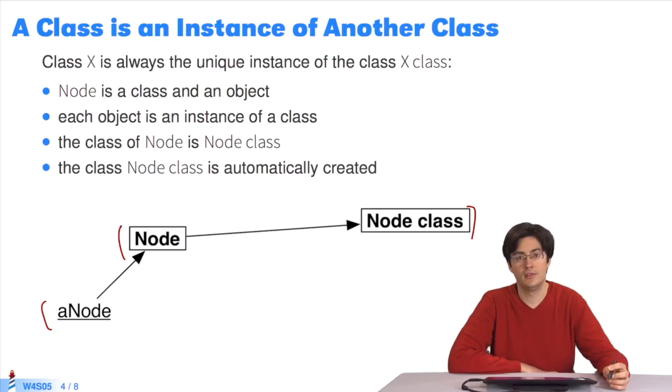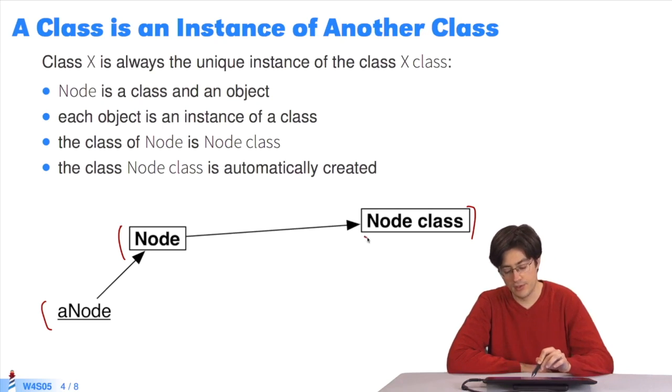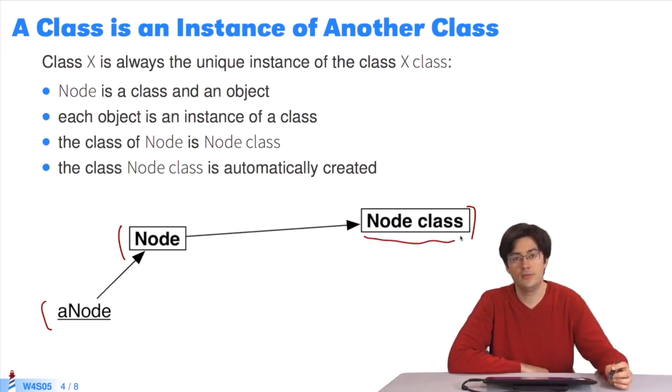So a node is an instance of node class, and node class is an object that is an instance of node class class. If that's the way it is, you may wonder: Node class is a class. A class is an object, an instance of a class. Which class is node class an instance of?